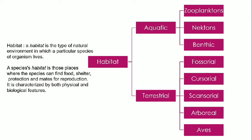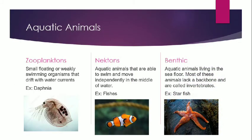Terrestrial animals are further classified into five forms: fossorial, cursorial, scansorial, arboreal, and aerial. Now talking about aquatic animals — aquatic animals include both freshwater and marine animals. They are further classified into three types: zooplanktons, nectons, and benthic.